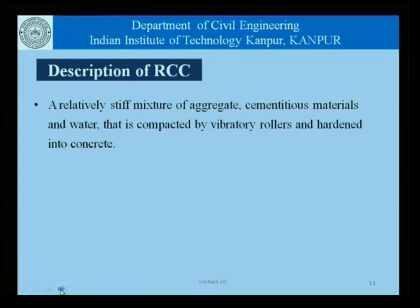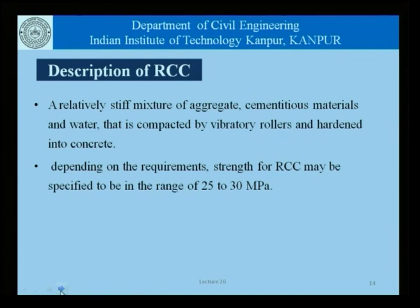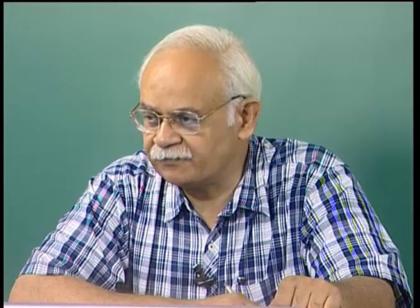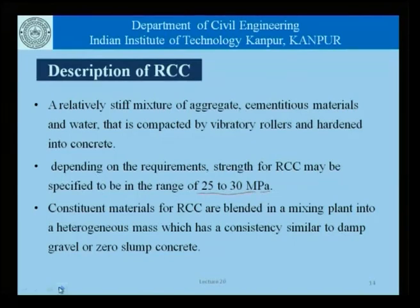Roller compacted concrete is a relatively stiff mixture of aggregate, cementitious materials, and water, compacted by vibratory rollers and hardening into concrete. Depending on the requirements, the strength of RCC may be specified in the range of 25 to 30 MPa. This strength is not outside the normal — we often deal with 25 to 30 MPa concrete — except that this concrete is placed and compacted very differently, which is why in the fresh state it looks very different.